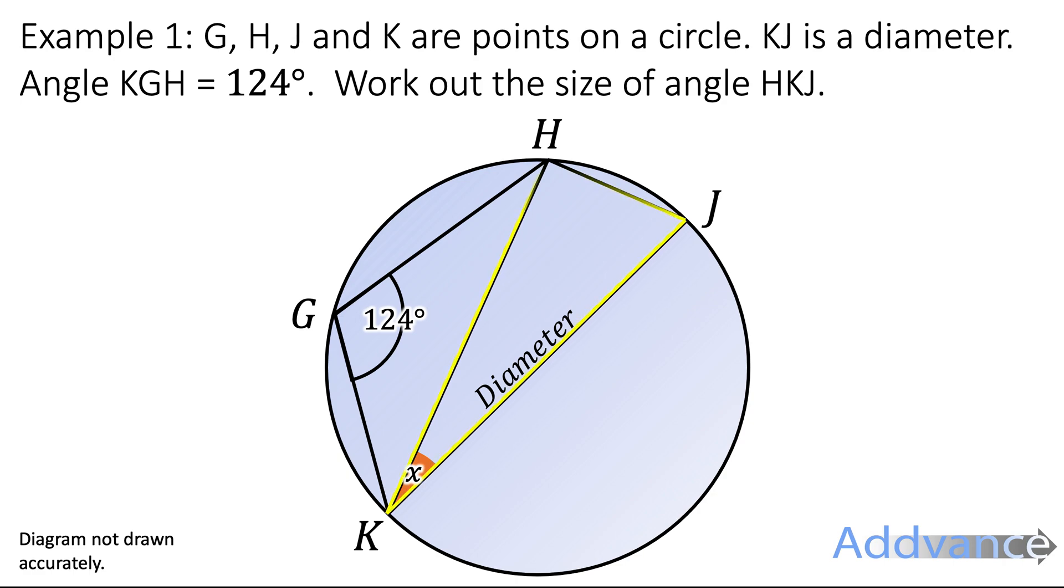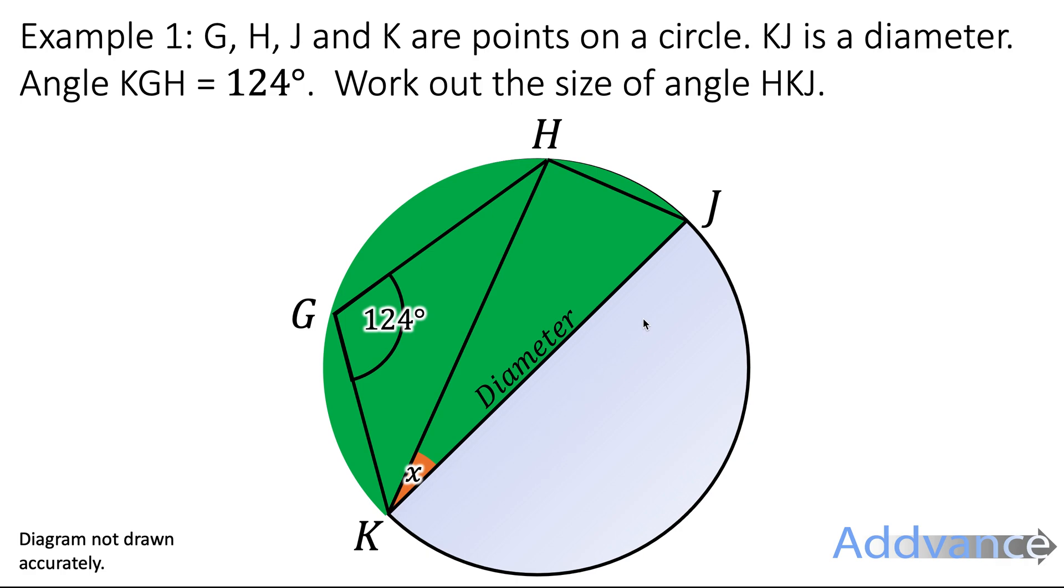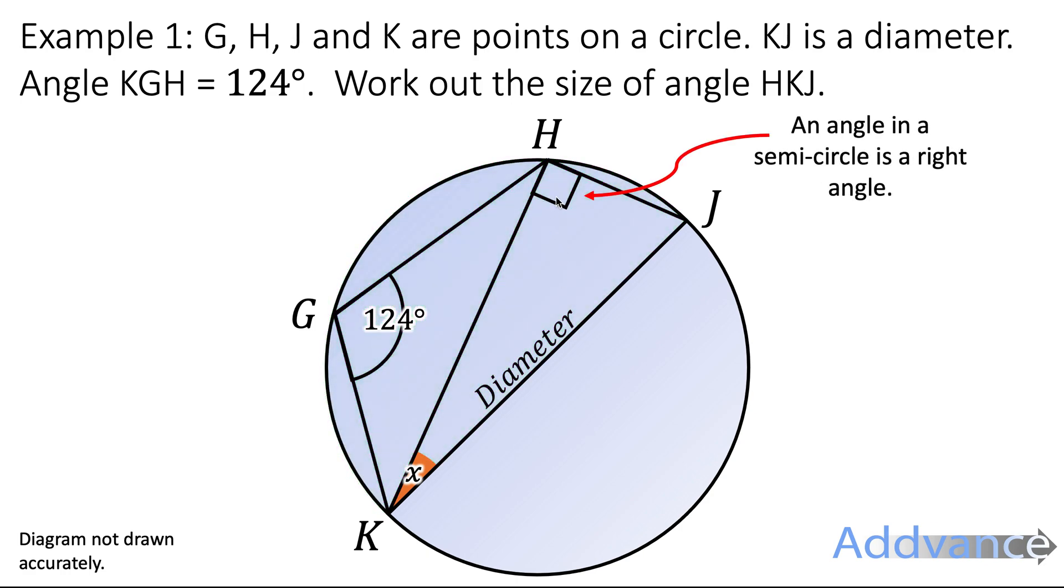Now we can start looking at this triangle here and we can see that this is in a semicircle because a diameter cuts this circle in half, therefore it's a semicircle with a triangle inside of it. And that means that this must be a right angle from our circle theorem saying an angle in semicircle is a right angle.